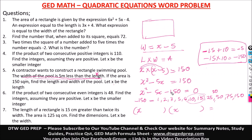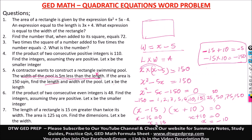Setting each factor to zero: x - 15 = 0 gives x = 15, and x + 10 = 0 gives x = -10. Taking the positive value, our length x = 15. Our width is x - 5 = 15 - 5 = 10. So the length is 15 meters and the width is 10 meters.